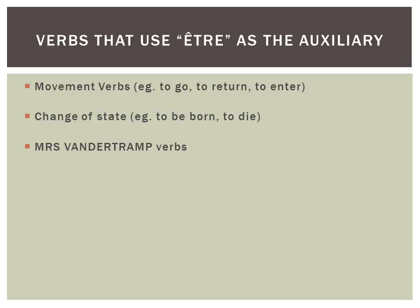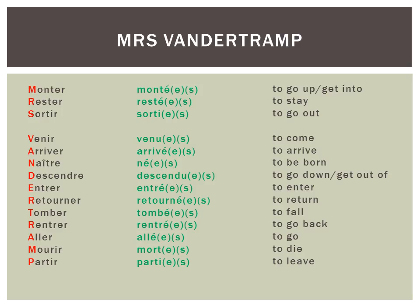There's a list of common verbs that use être, and you can use Mrs. Van der Tramp to help you remember which ones they are. M stands for monter, past participle monté, which means to go up or get into. Notice that all of the être verbs need to agree with the subject of the sentence. So if you say 'I' and you're a girl, you would need to add an extra E to the past participle — so monté would be spelt with an extra E. If you were a group of people, either all male or mixed, you would add S, and if you were a group of only girls, you would add ES.